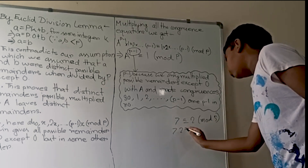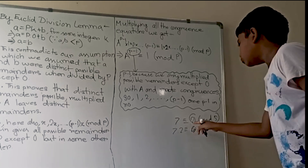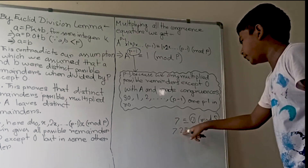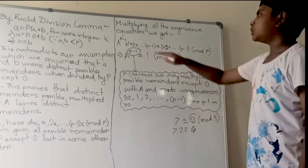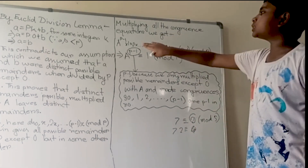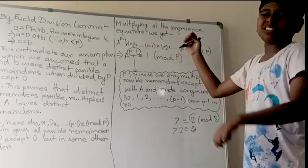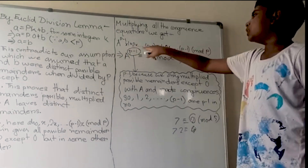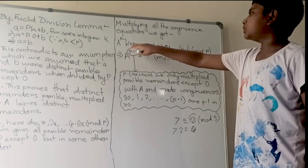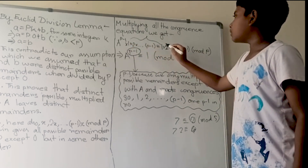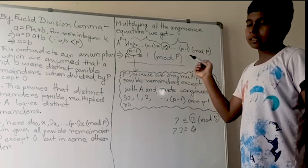For example, 7 ≡ 2 mod 5, so 7·2 = 14 ≡ 4 mod 5 — the remainder 2 doesn't repeat, and 4 appears elsewhere. Now multiplying all the congruence equations together, we get a^(p−1) · (1·2·3·...·(p−1)) on the left side, and (1·2·3·...·(p−1)) on the right side.